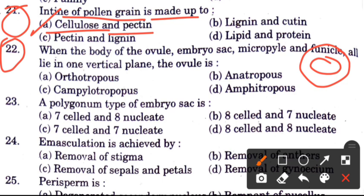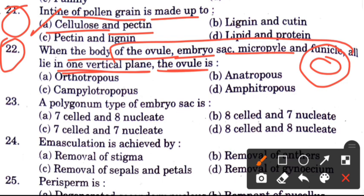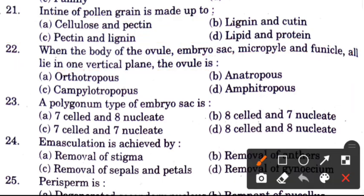Question 22: When the body of the ovule, embryo sac, micropyle and funicle all lie in one vertical plane, the ovule is — options are orthotropous, anatropous, campylotropous, amphitropous. The answer is A, orthotropous.